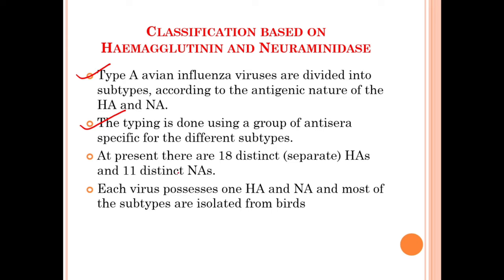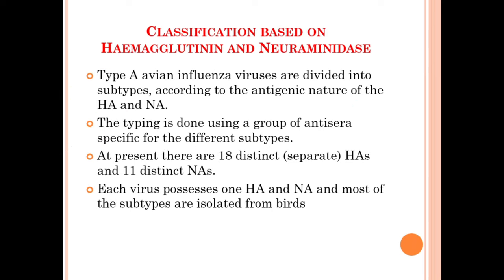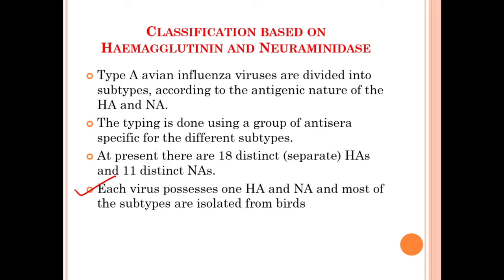To classify the type A avian influenza virus into subtypes, blood serum containing different antibodies is injected in different cases of disease, and the action of the antibody is studied — whether it is protective or not — and on that basis the virus is classified into subtypes. At present there are 18 distinct hemagglutinin subtypes and 11 distinct neuraminidase subtypes. Each virus in the influenza family has one hemagglutinin and one neuraminidase, and most subtypes are isolated from birds.